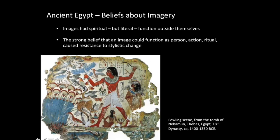Ancient Egyptian beliefs about imagery: images had a spiritual but literal function outside themselves. The strong belief that an image could function as a person, action, or ritual caused a resistance to stylistic change. Tomb scenes of the deceased receiving food, or temple scenes of the king performing perfect rituals for the gods, were literally causing those things to occur in the divine realm. If the image of the bread loaf was omitted from the deceased's table, they had no bread in the afterlife. If the king was depicted with the incorrect ritual implement, the ritual was incorrect and this could have dire consequences. This belief led to an active resistance to change in codified depictions.